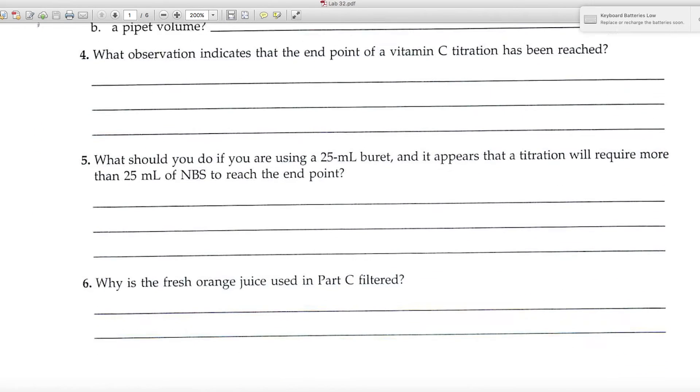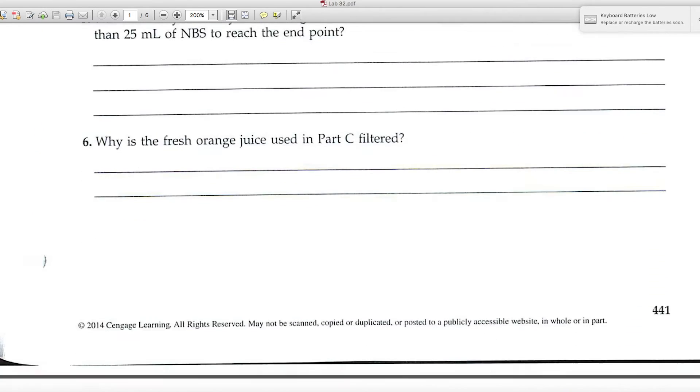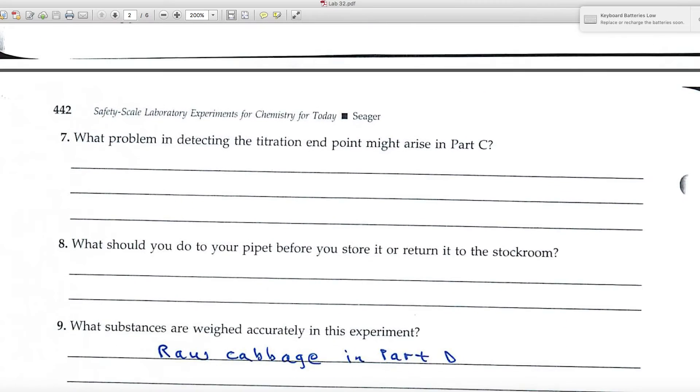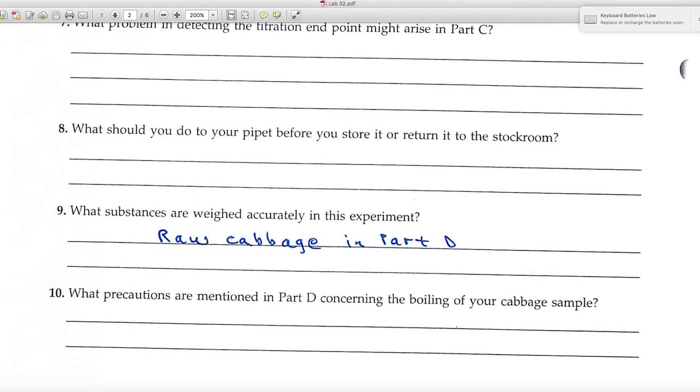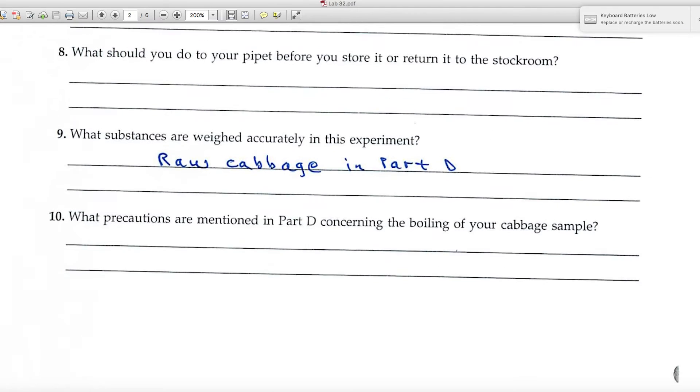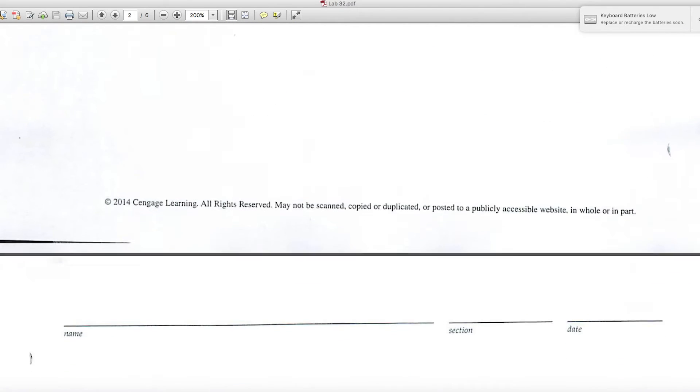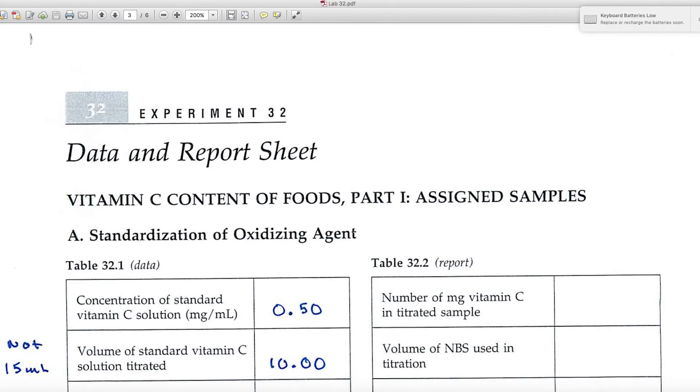The rest of these questions are based upon the content in the reading, not too difficult. Number nine: what substances are weighed accurately in this experiment? Well, in Part D you read that it's the raw cabbage. And here are the data and report sheets.